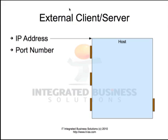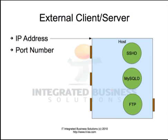When an external application is talking with the server it needs to provide two pieces of information: an IP address of the host but also a port number. A port number can be seen as a window to get inside to the host. In this case we have three server processes running: SSHD, MySQL, and FTP. SSHD by default will use port number 22, FTP will use port 21, and MySQL will use port 3306 by default. By having a client talk to both the IP address and the port, it will determine the service or the server with which it will be interacting.